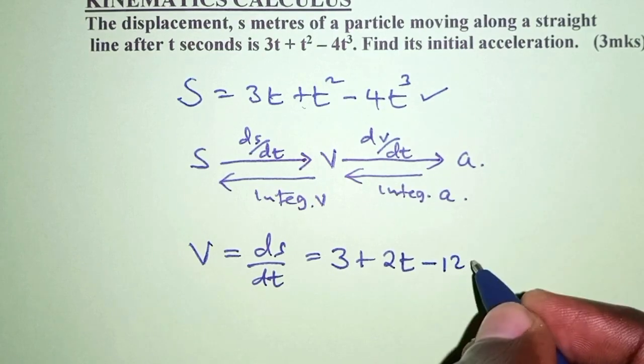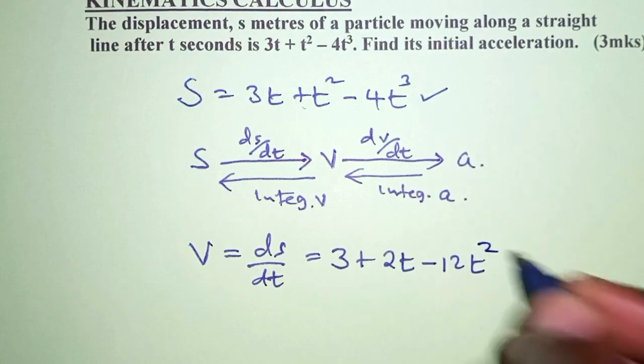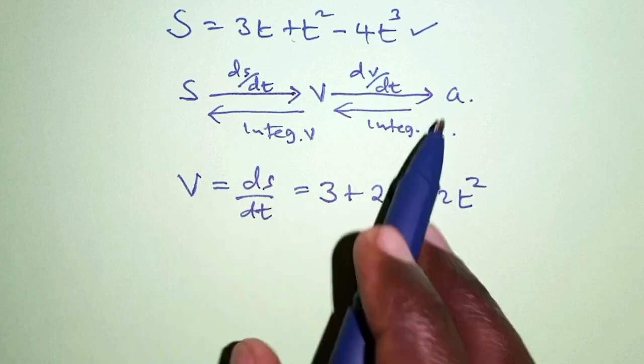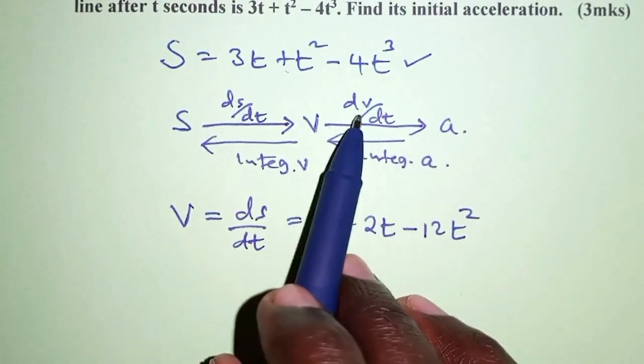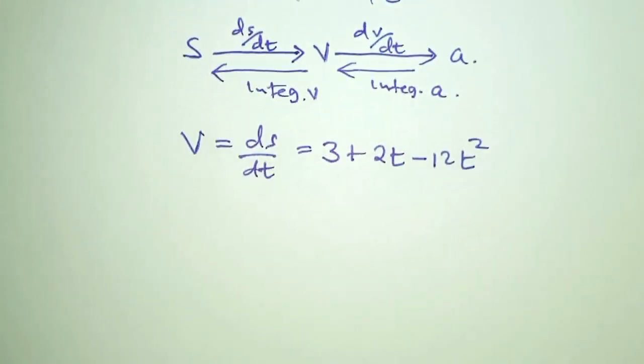And then the power we subtract 1, so that is 2. So that is for the velocity. From velocity, we can differentiate again, differentiate velocity with respect to time to get acceleration. So that is what we're looking for.